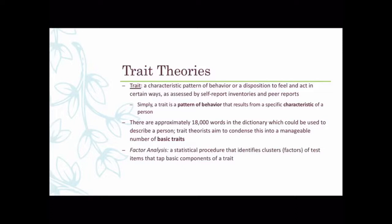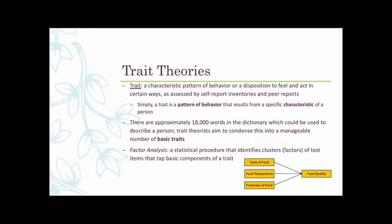With factor analysis, we look at which items on a test correlate with one another. On a standard personality inventory with agree-to-disagree statements on a one-to-five scale, we look for patterns: if all people who mark five for 'outgoing' also mark five for 'talkative,' those questions point to the underlying factor of extroversion. Similarly, taste, temperature, and freshness of food all relate to the underlying factor of food quality. On the worksheet, you're asked to come up with your own example of this.